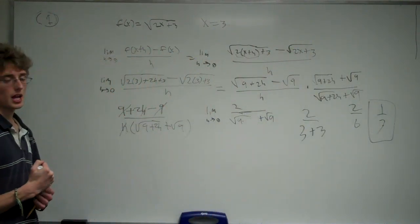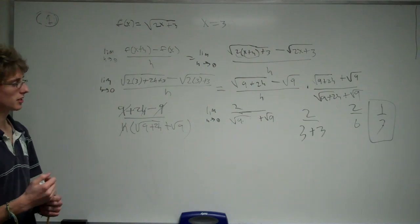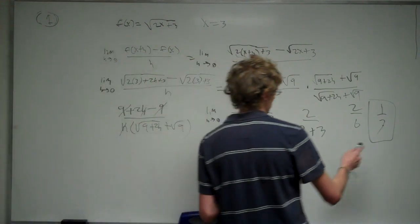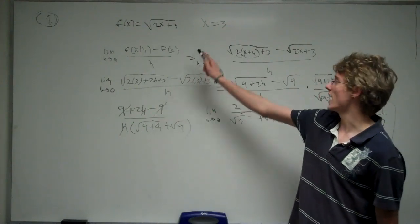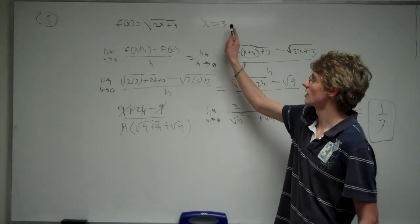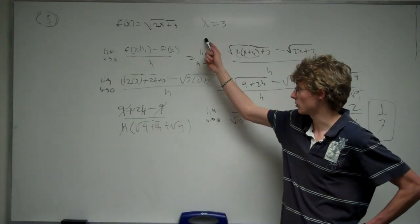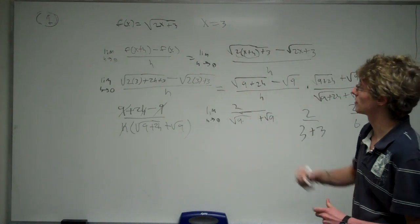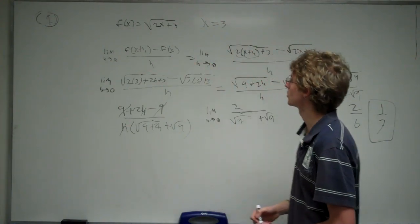Now, the second part wants us to find the equation of the tangent line. We know what the slope is, we know what an x-value of a point is, so we can find the y-value of this point at x equals 3 by plugging 3 back into the original equation.